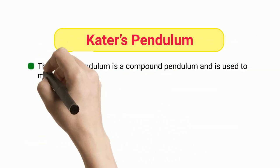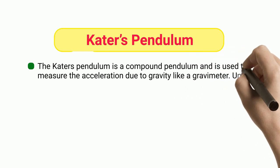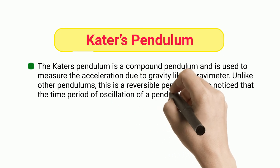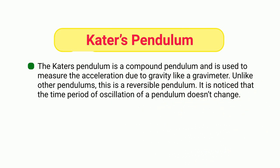Kater's Pendulum: The Kater's pendulum is a compound pendulum and is used to measure the acceleration due to gravity like a gravimeter. Unlike other pendulums, this is a reversible pendulum. It is noticed that the time period of oscillation of a pendulum doesn't change.